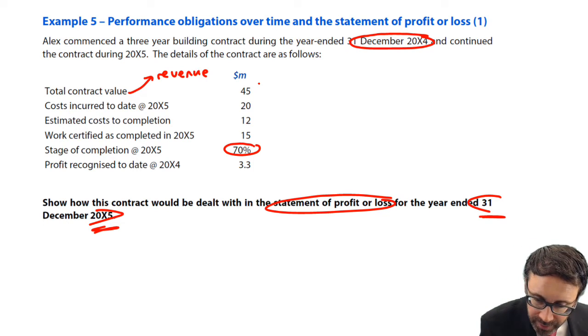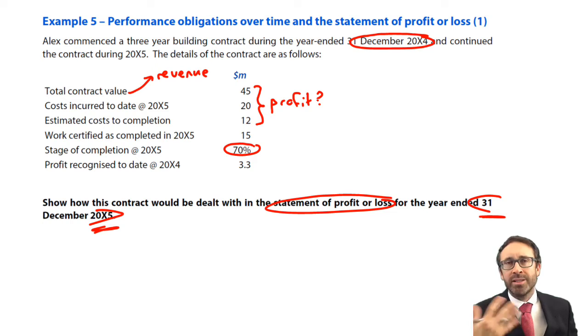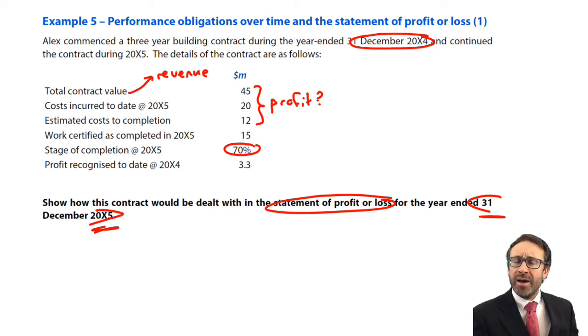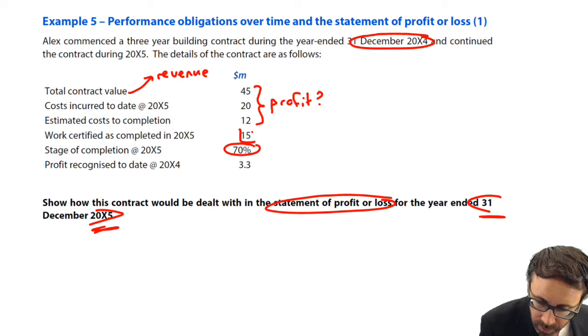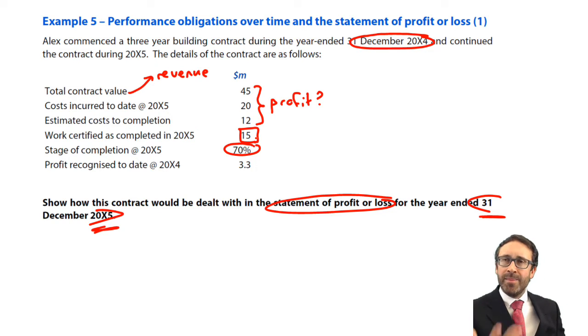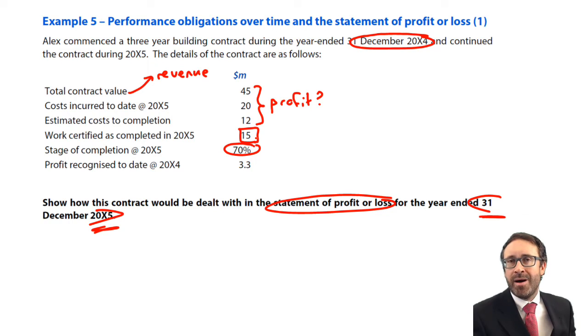So what we could go through and do, and this is important when we get to scenarios like that, we can work out whether or not this contract is profit making. It's very important to identify whether or not the contract is making a profit or whether it is making a loss because the accounting treatment will ultimately be ever so slightly different. We're also told that the work certified as completing 20X5 is $15 million. So effectively, that is what we are told is the revenue for this year.